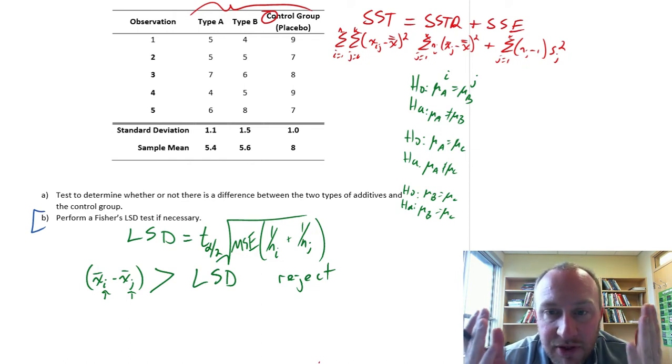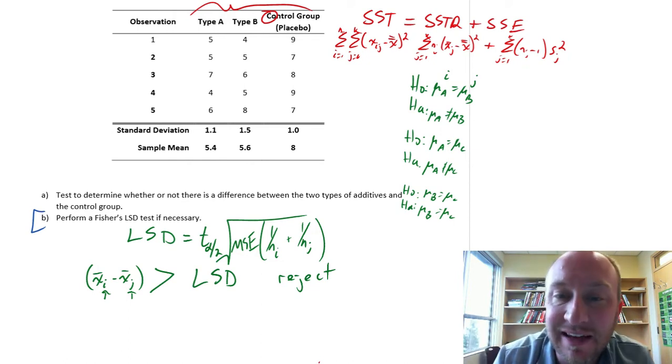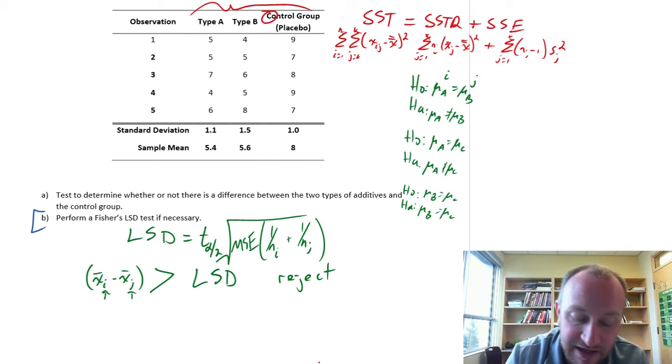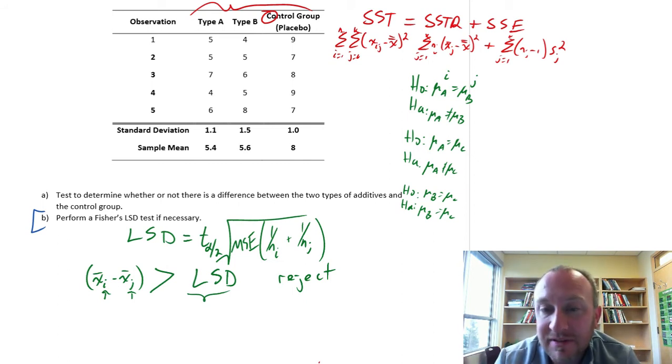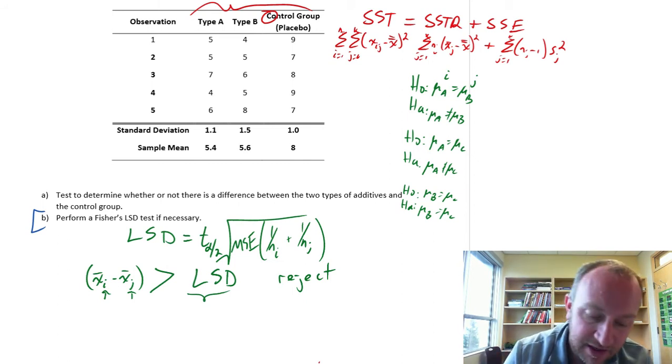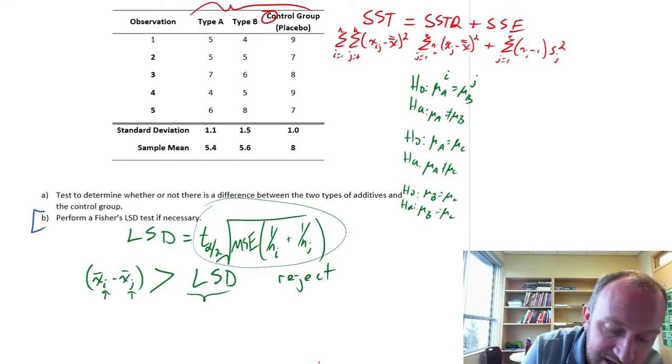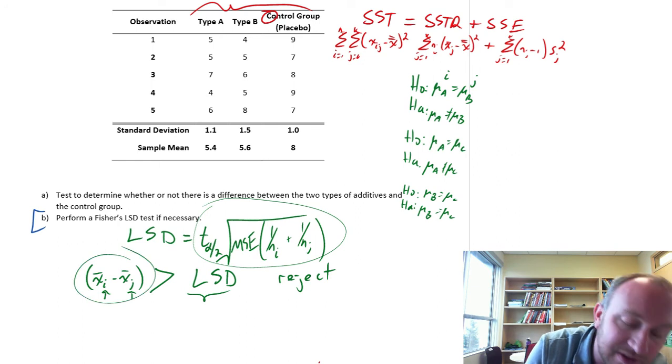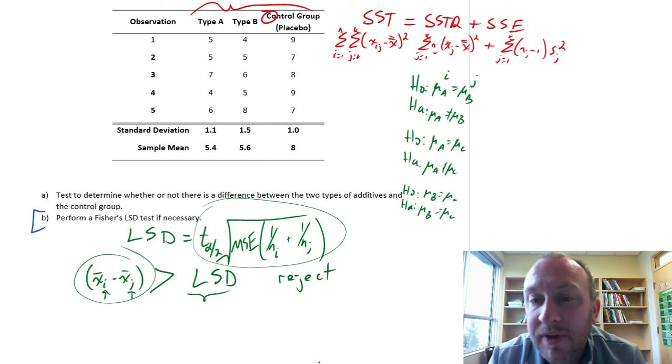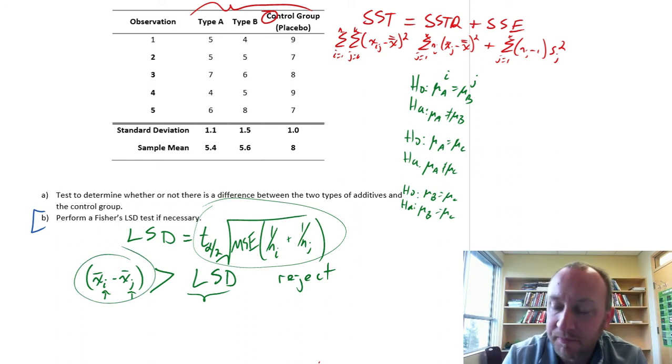In this case we have three samples, they all have the same sample size, so we only have to calculate this least significant difference, this LSD value, once. If our samples had different sample sizes, well then we would have to calculate a specific value for this LSD that would correspond to the specific pair of samples that we're comparing.